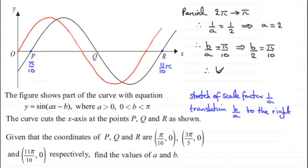And if I multiply both sides by 2, I therefore have that b equals 2 tenths pi, or in other words, 1 fifth pi, or pi over 5. So there's my value for a, it's 2, and my value for b is a fifth pi.